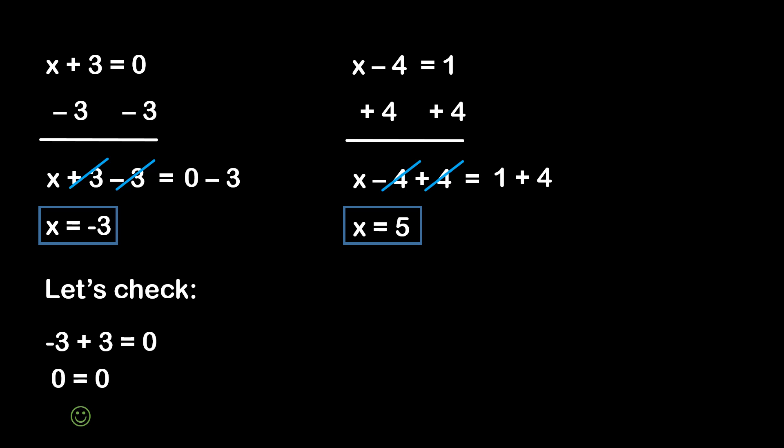Same idea with the next example. We got x is equal to 5, so let's sub that into the equation. We get 5 minus 4 is equal to 1, which is 1 is equal to 1. And 1 is indeed equal to 1, so we know that's correct.